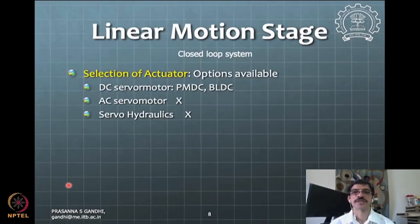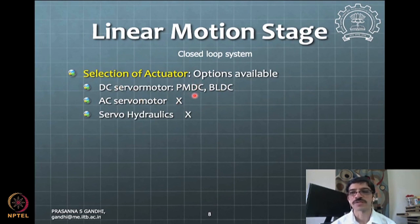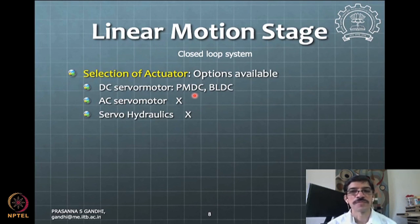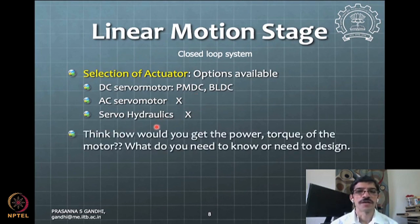For actuator selection, we typically have different choices available and make a choice based on that. When we have a positioning requirement, BLDC motors are typically not used. We use permanent magnet DC motors or stepper motors. Stepper motors are not a servo-type drive — they are more of an open-loop drive. For servo operation with closed-loop feedback, we are constrained to using permanent magnet DC motors.